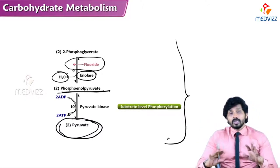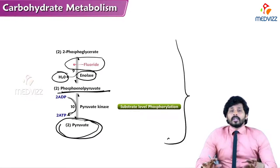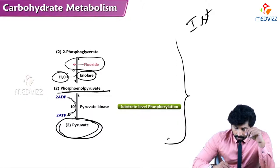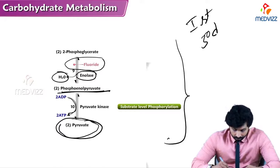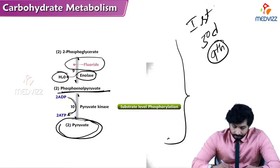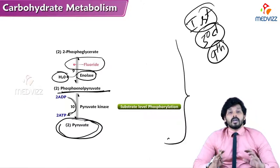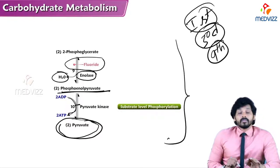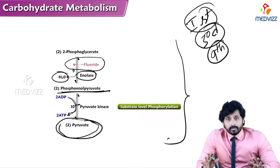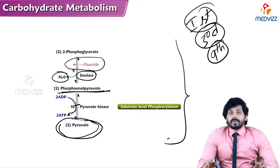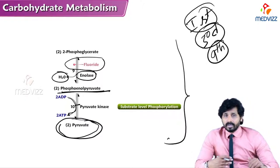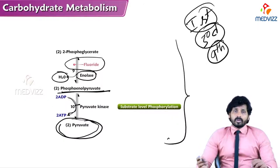There are ten steps in glycolysis. Steps 1, 3, and 9 are irreversible; the remaining steps are reversible. This has significance for gluconeogenesis, where the reversibility or irreversibility of these reactions will be discussed in detail. Thanks for watching.